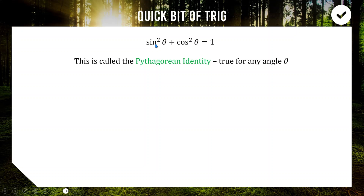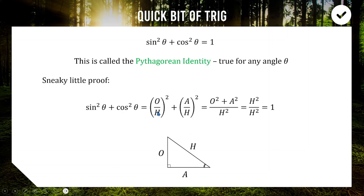Here's why it always works. Starting with a right-angle triangle where the marked angle is theta: sine theta is O over H, and cos theta is A over H. Squaring them, we get O squared over H squared plus A squared over H squared. Combining the fractions, we get O squared plus A squared, all over H squared. By Pythagoras, O squared plus A squared equals H squared, so our expression becomes H squared over H squared, which equals one. No matter what the angle is, sine squared plus cos squared always equals one.